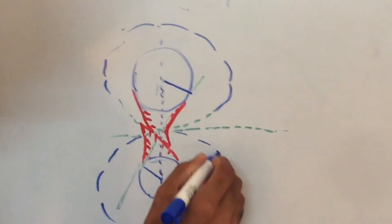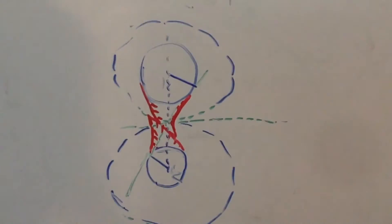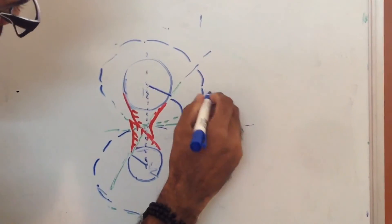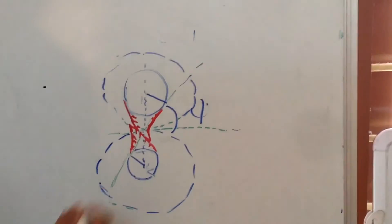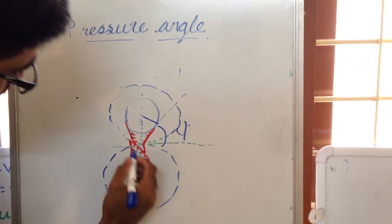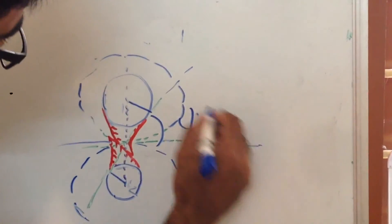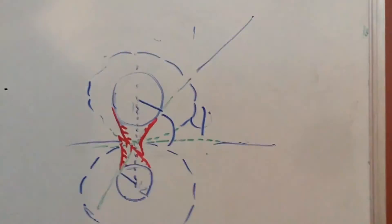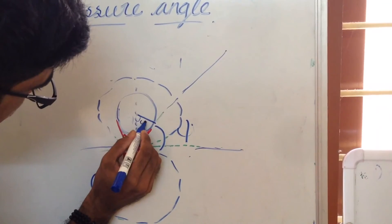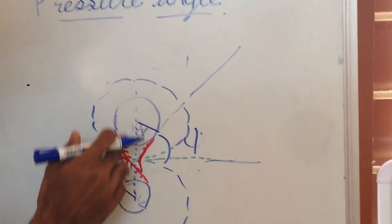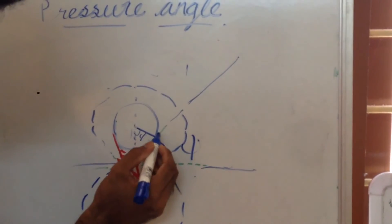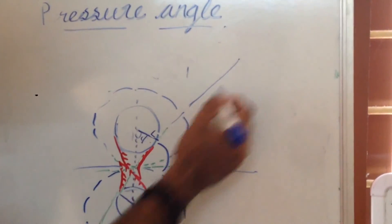The pressure angle is defined as the angle between the common tangent to the pitch circle and the line of force — that is, this line and this line. It can also be defined as the angle between the line of centers and the radius which is perpendicular to the line of force.